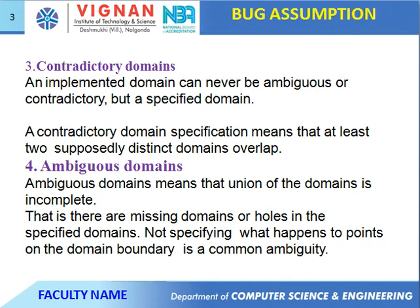Next, contradictory domains. An implemented domain can never be ambiguous. The specified domain can be contradictory — a contradictory domain specification means that distinct domains overlap. This is called contradictory domains. Next, happiness domains (missing domains): the union of domains is incomplete, meaning there are missing domains — either open domain missing, closed domain missing, or holes in the specified domains. Specifying a point on the domain boundary is a common ambiguity.